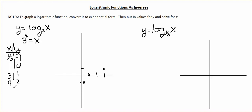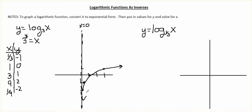What happens if we put in negative 2? We take the reciprocal because it's a negative power, so we take 1/3 and raise it to the positive power of 2. One third squared is 1/9, so x is 1/9 and we're at y = negative 2, getting really close to our y-axis. For a logarithmic function, we're going to get infinitely close to the y-axis but never hit it. This is a vertical asymptote at x = 0, and our logarithmic function approaches it but never touches it.